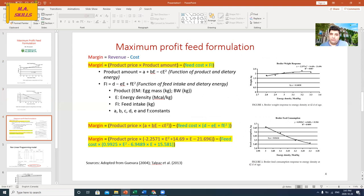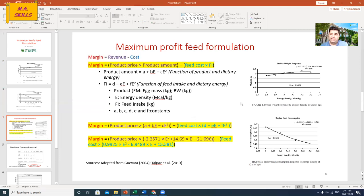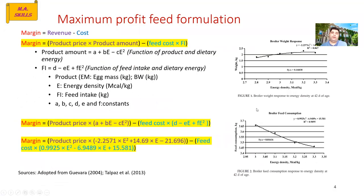The formula for margin or profit is revenue minus cost. We want to maximize it. Revenue is product price times product amount, and cost is feed cost times feed intake — because we are talking about nutrition. We are going to replace product amount and feed intake with the relevant regression equations from this paper.